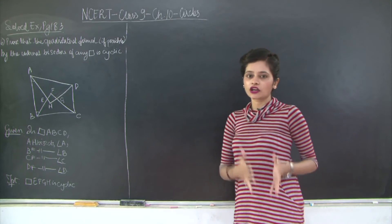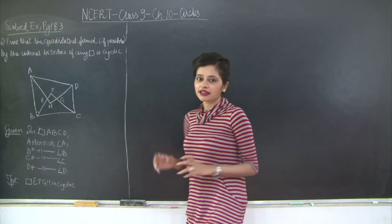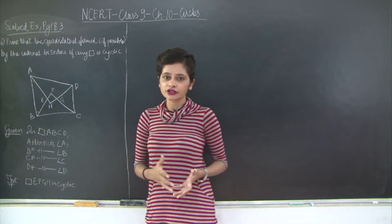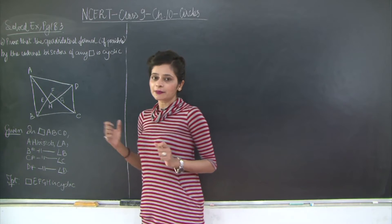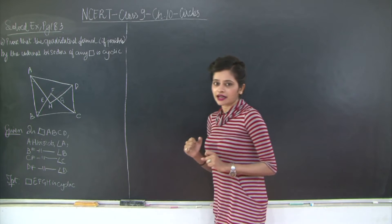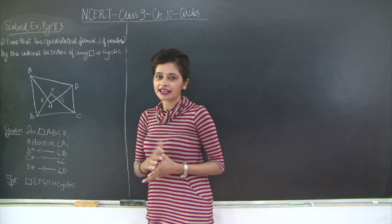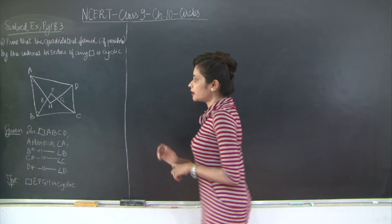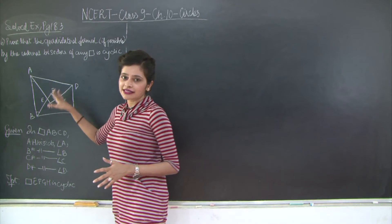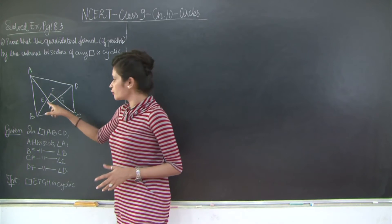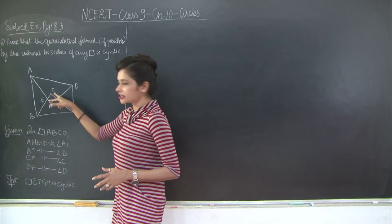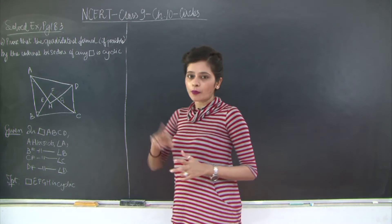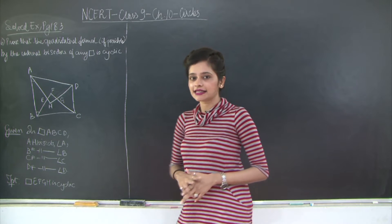So how do we prove that a quadrilateral is cyclic? Either by proving that the vertices lie on the circumference of a circle, or by proving that the sum of a pair of opposite angles of a quadrilateral is 180 degrees. A construction to draw a circle through EFGH doesn't seem feasible, so we will try to prove that a pair of opposite angles of quadrilateral EFGH sums to 180 degrees.